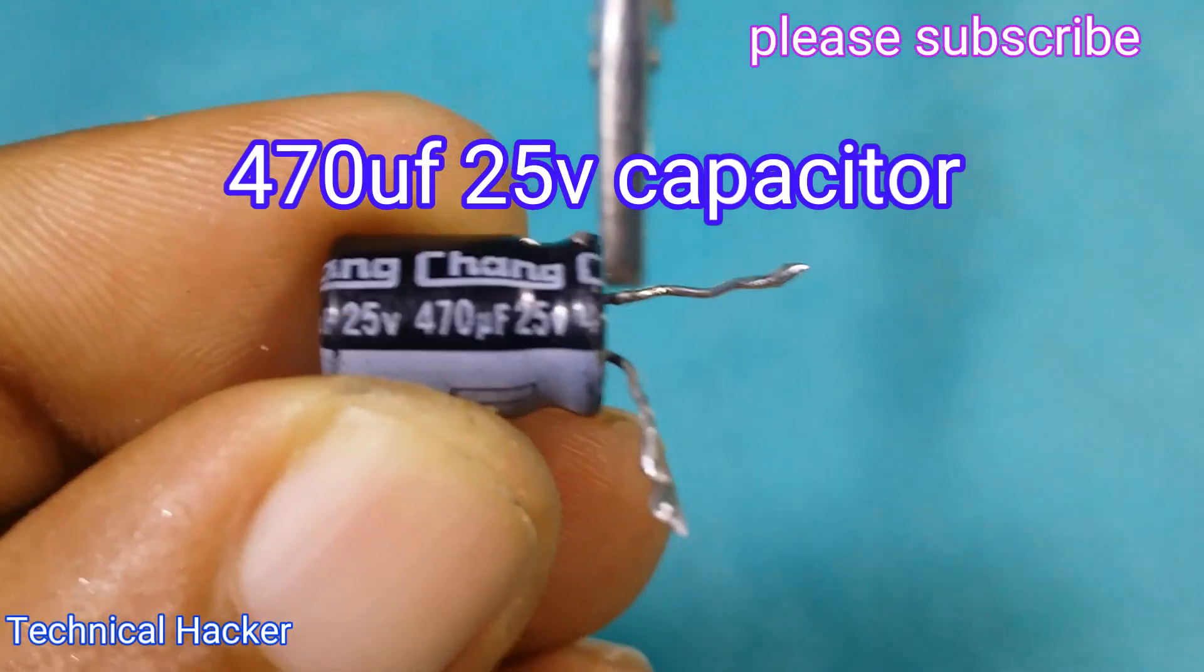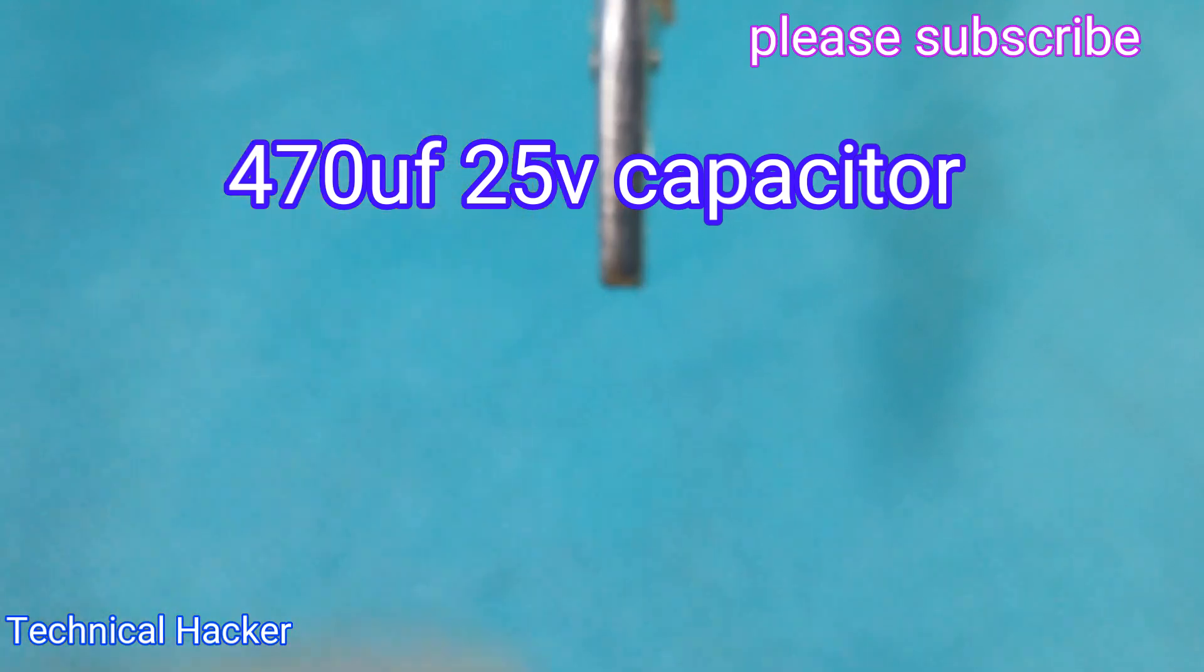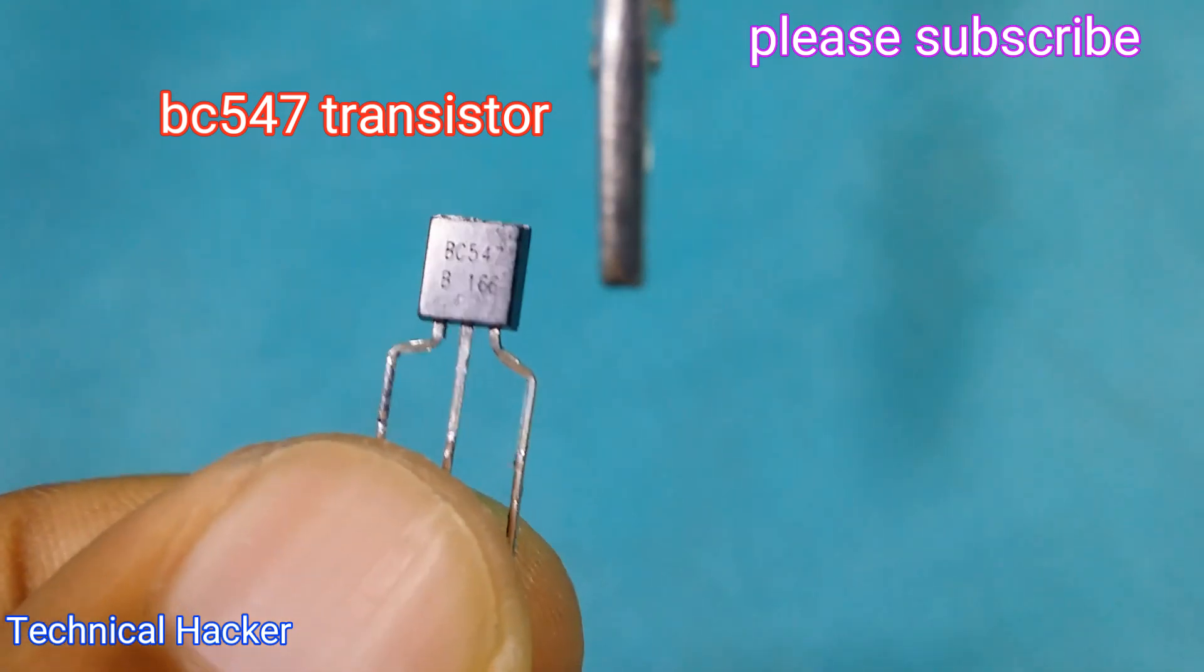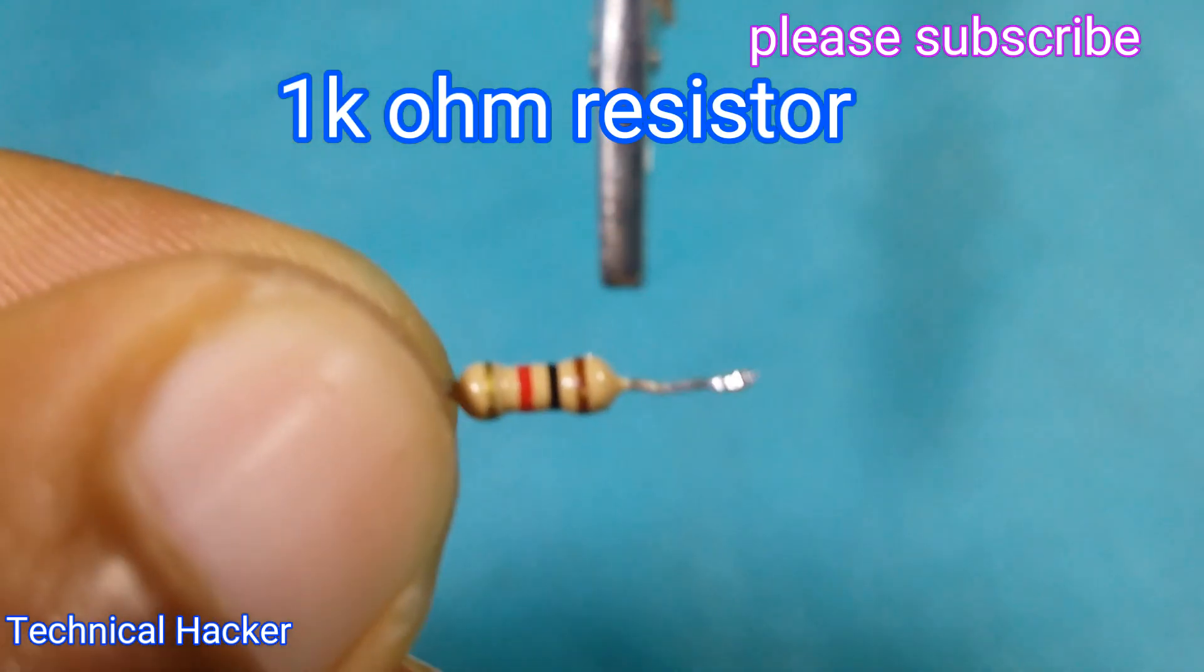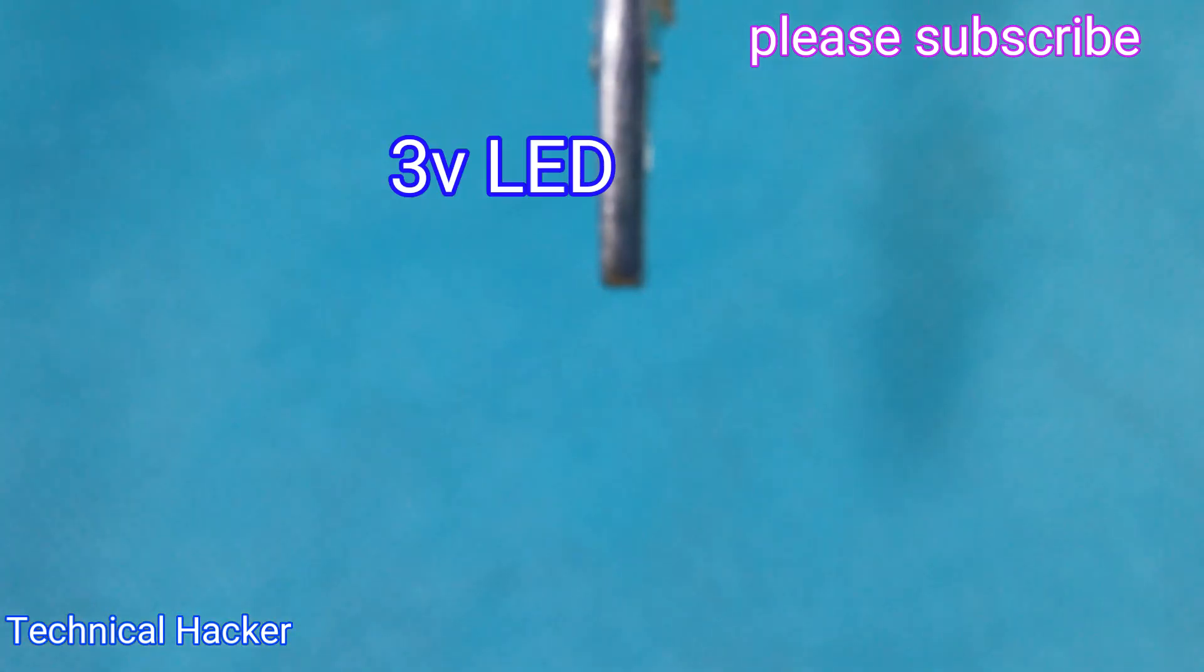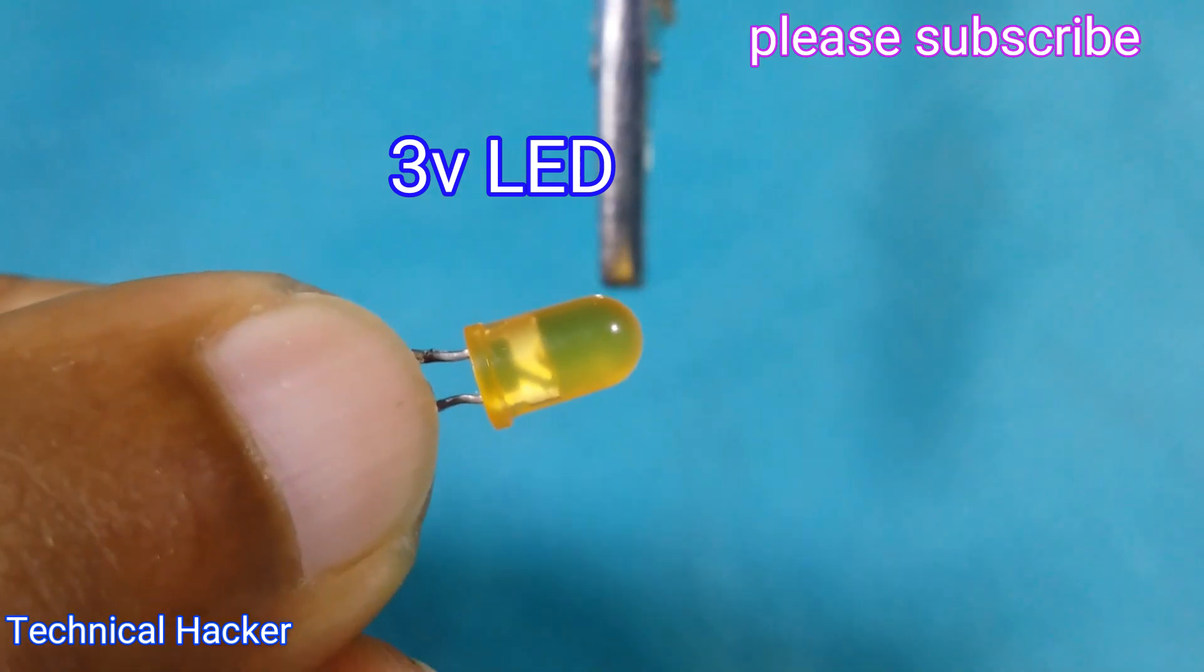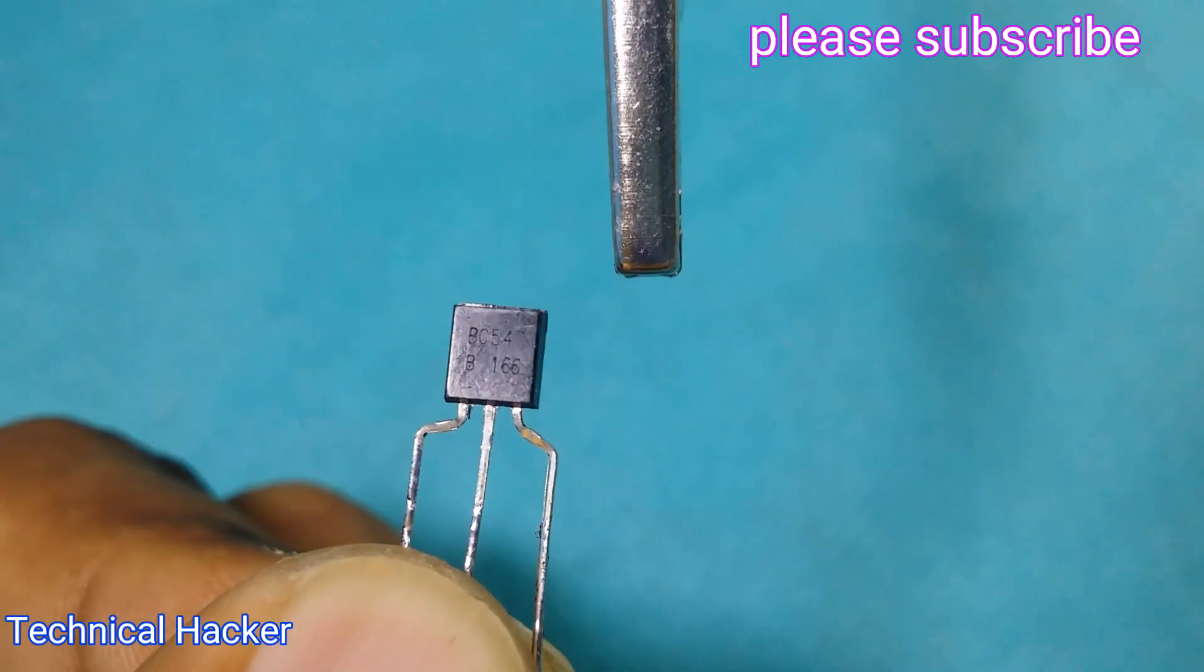Needed components: 470 uF 25 volts capacitor, BC 547 transistor, 1 kilo ohm resistor, 3 volts LED, 12 volts power supply.